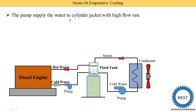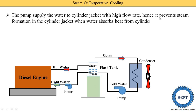The pump supplies water to the cylinder jacket at a high flow rate, and this prevents steam formation in the cylinder jacket when the water absorbs heat from the cylinders. A high mass flow rate of water through this pump prevents premature steam formation inside the jacket.